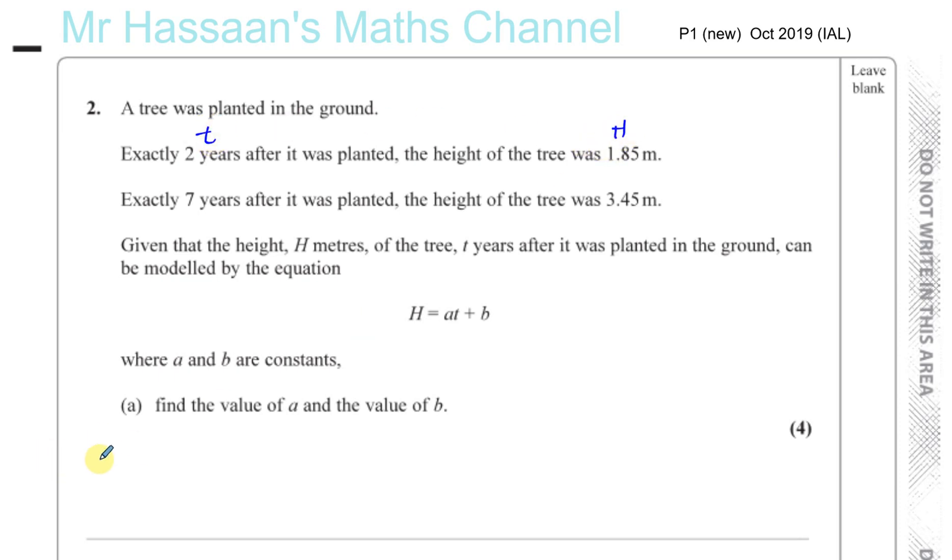So in one situation, when t equals 2, H equals 1.85. If we substitute these values into the equation, we have 1.85 = a times 2 plus b, which gives us 2a + b = 1.85. That's one equation.